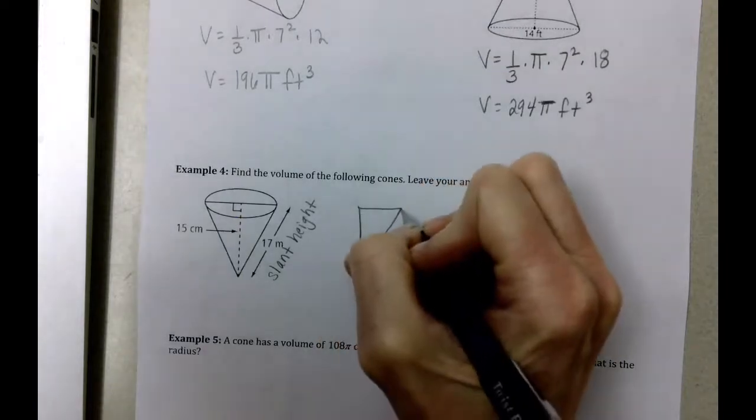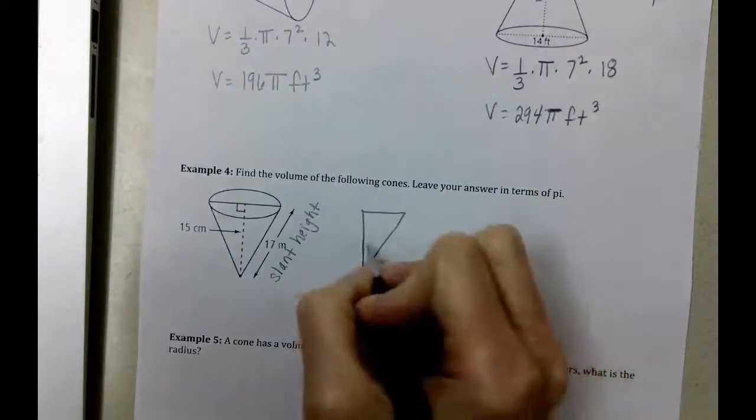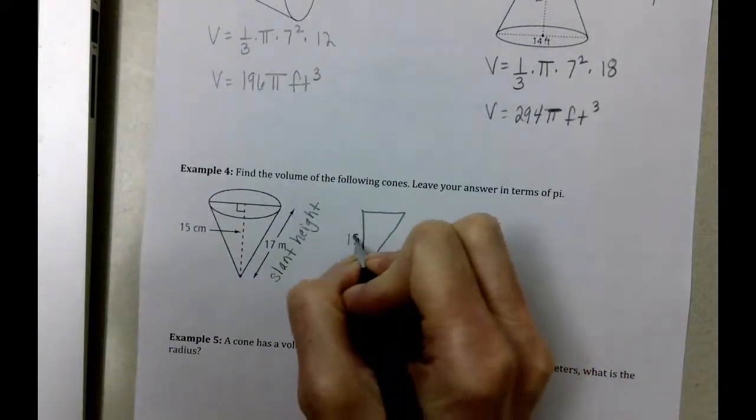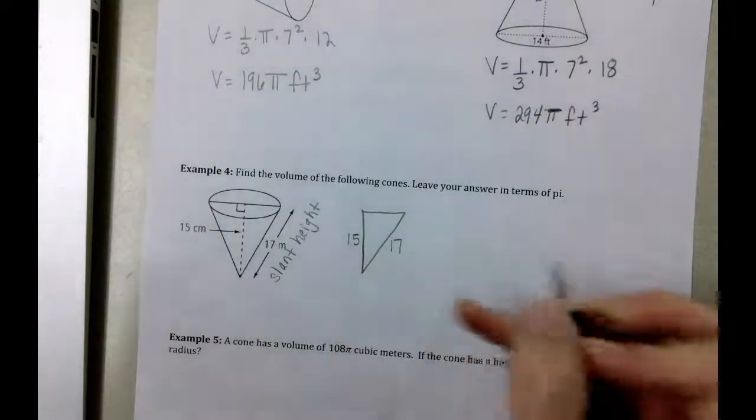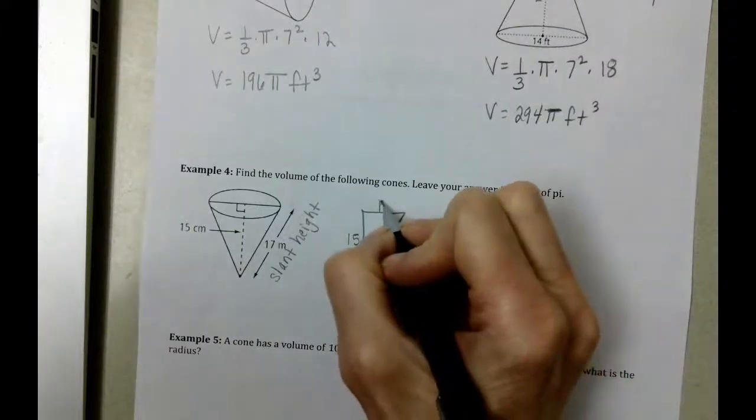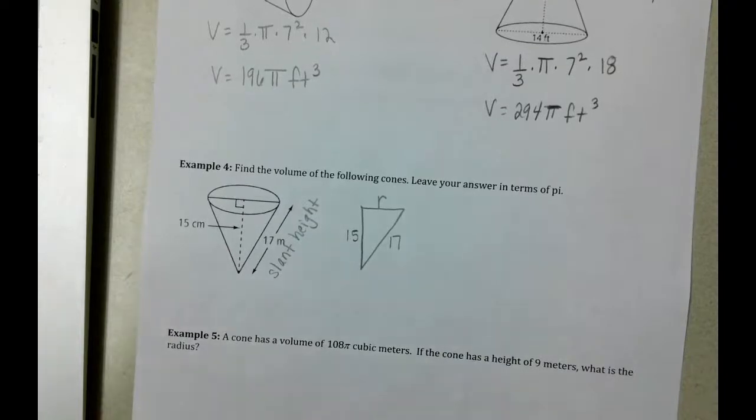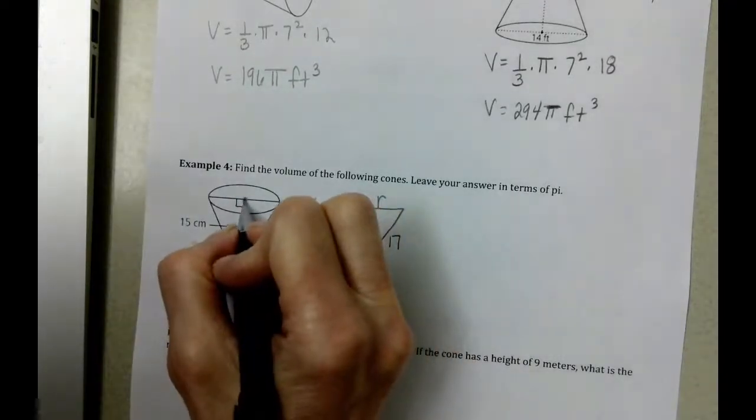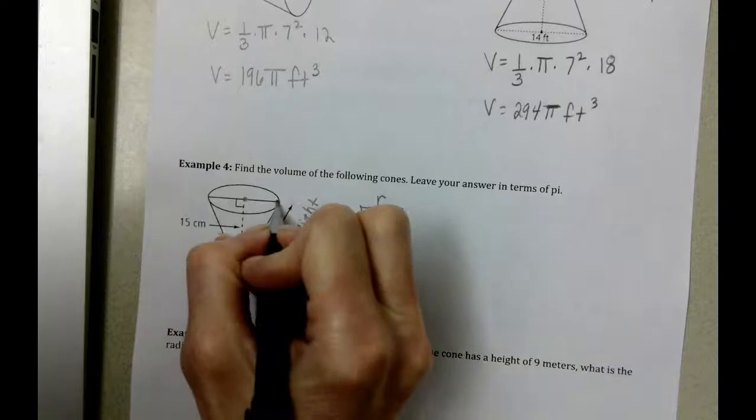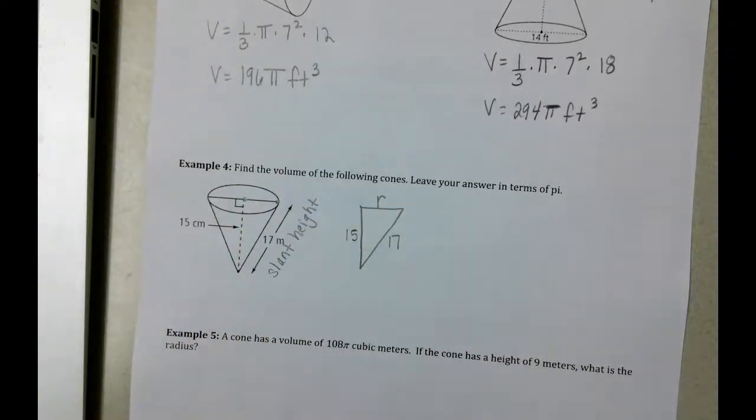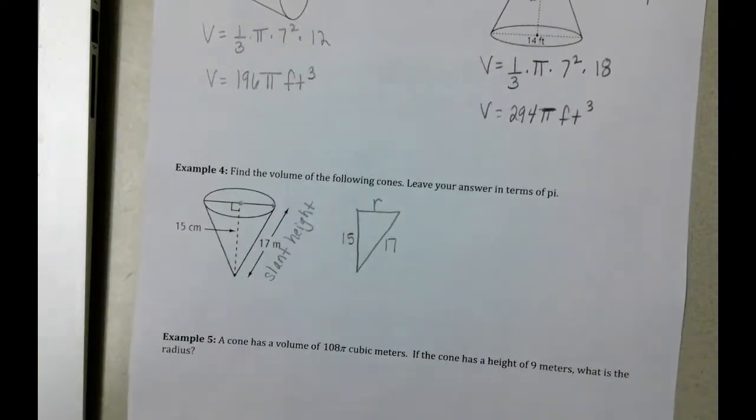Actually we know the height of the cone clearly. Here we know this is 15, we know this is 17. What we really need to find is the radius. From the center of the circle to an endpoint on the circle, there's the radius, and we're going to use the Pythagorean theorem.